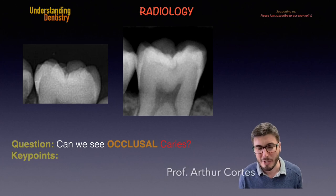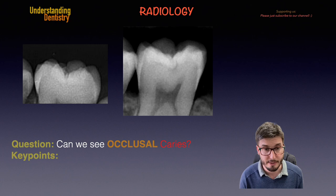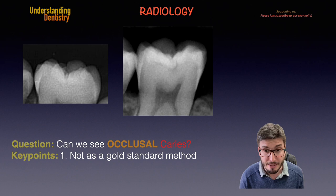Hello guys, and welcome to this short video to discuss a little bit about occlusal caries. Can we see occlusal caries on periapical and bitewing radiographs? The answer is yes, we can, sometimes, but not as a gold standard method. The gold standard method to assess occlusal caries is the clinical examination by means of the ICDAS evaluation.